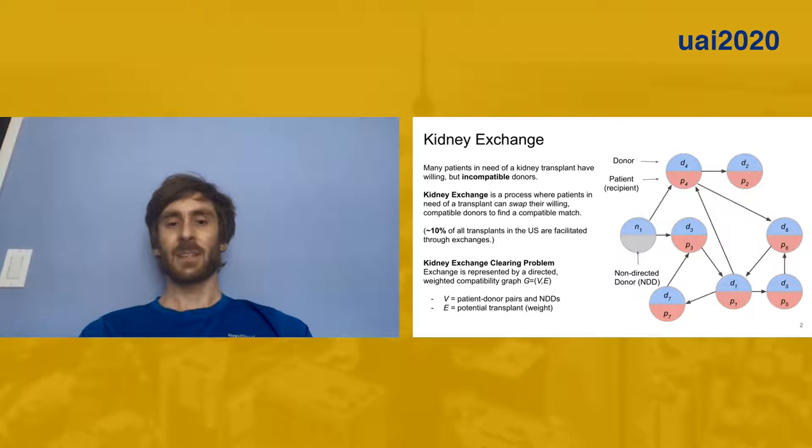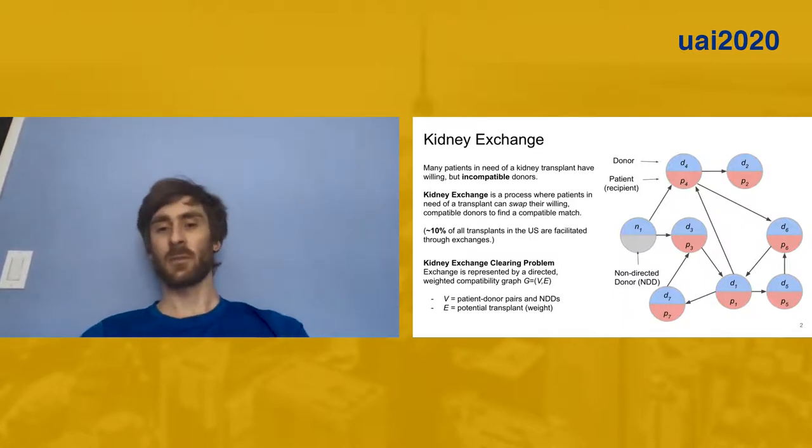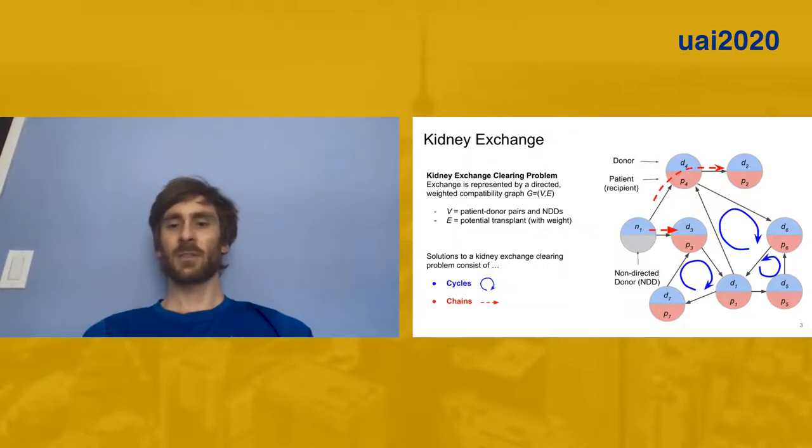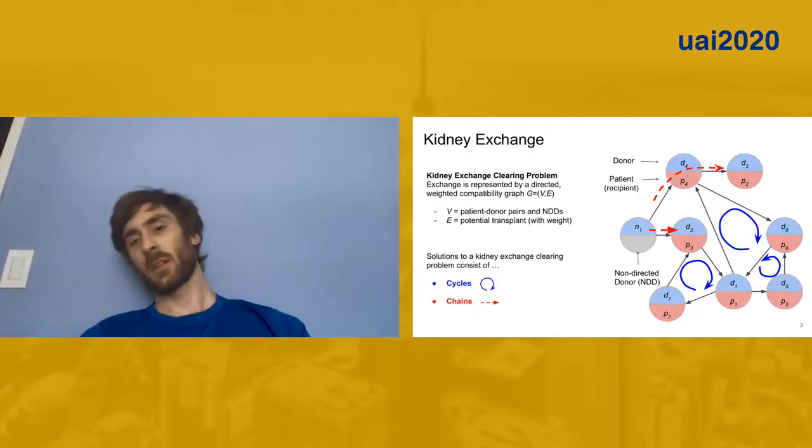Mathematically, the kidney exchange clearing problem corresponds to a cycle packing and chain packing on a directed graph. In this directed graph, we have a vertex for every incompatible patient-donor pair, and we have edges where the donor from one node can donate to the patient from another node. In addition, we also have these non-directed donors, which we call NDDs. These are sometimes called altruists. The solution to a kidney exchange clearing problem is a set of cycles and chains, where cycles are directed cycles on this graph. And chains are initiated by an NDD, where they will donate to one pair, which frees up that pair to donate to another pair, and so on.